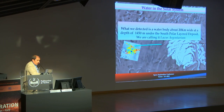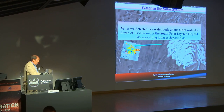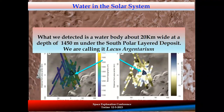However, any radar signal needs an interpretation, and the interpretation can be tricky to fully understand. Recently, in the last two years, other papers — including gravimetric measurements — confirmed layering in the Martian subsurface in exactly that region, compatible with the existence of water, or at least of light material. We have called it Lacus Argentarium, in honor of Professor Picardi, the person who imagined and operated the Mars radar for a long time.